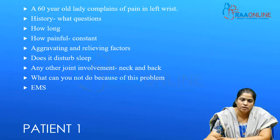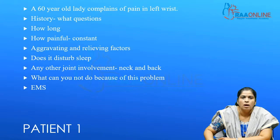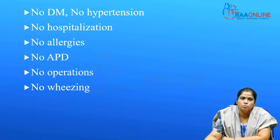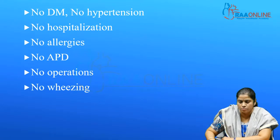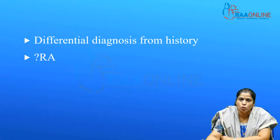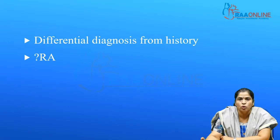This patient says she is unable to use her hands and there is no early morning stiffness. She does not have any diabetes or hypertension, no history of hospitalization, no allergies, no acid peptic disease, no operations, and no history of wheezing or asthma. From this history, what can be the diagnosis? Can we think of rheumatoid arthritis? Yes, although it is a little unlikely for it to be in only one joint. Rheumatoid arthritis is usually polyarticular and symmetrical, but there is a monoarticular type, so it's a little unlikely though. Since she is 60, maybe you could think about osteoarthritis.